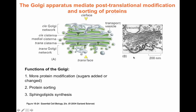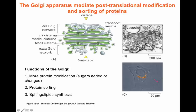As transmission electron microscopy shows, the Golgi apparatus is a set of separated membranes that looks like a stack of pancakes laid on top of one another. You can also appreciate that vesicles are being formed from the membrane and that those membranes are receiving vesicles coming from the trans-Golgi network. In fluorescence microscopy, the Golgi is stained with a fluorescent marker and can be seen close to the nucleus, in between the endoplasmic reticulum and the plasma membrane.